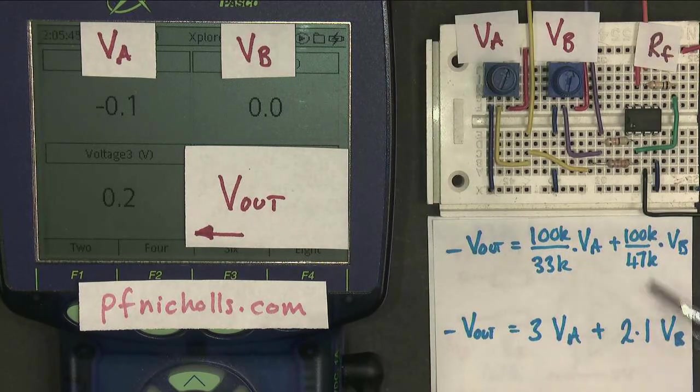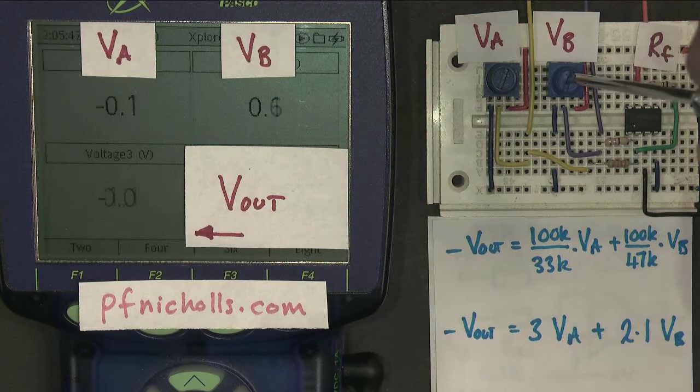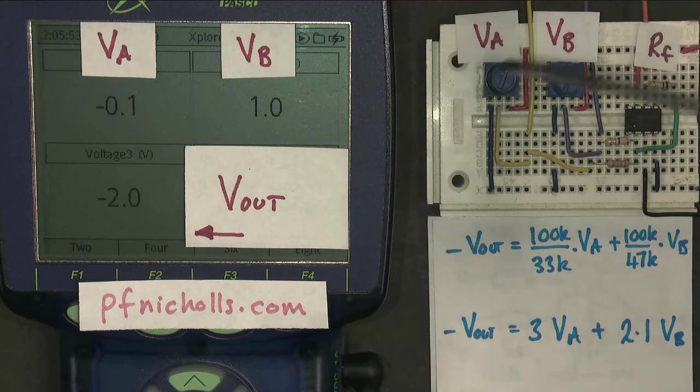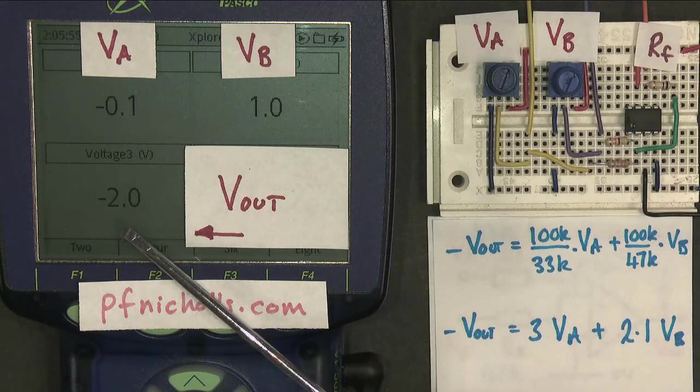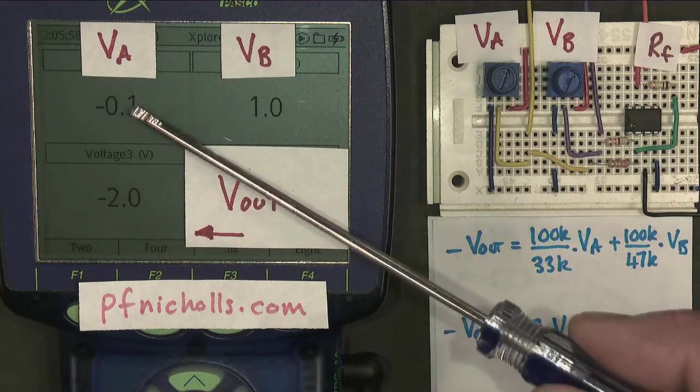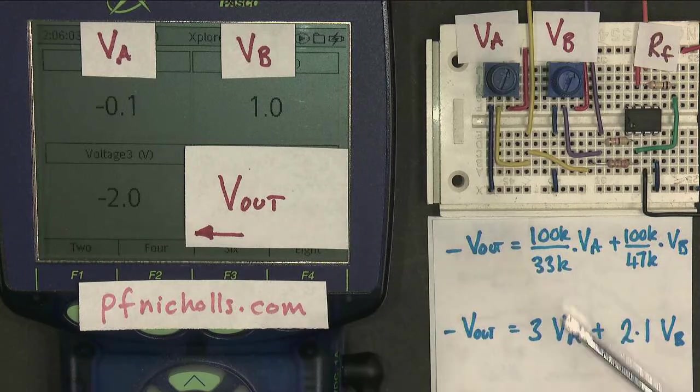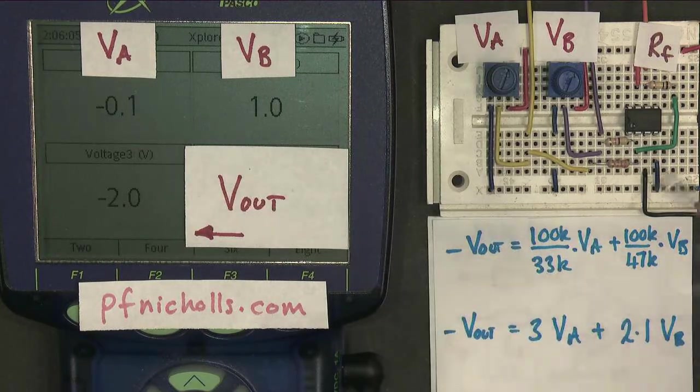Vb now, I'm going to make 1 volt. And you see the output is minus 2.1, minus 2.0. It's probably due to this bit here being added on. So Vb is multiplied by approximately 2 to give the output. Va is multiplied by 3 to give the output.